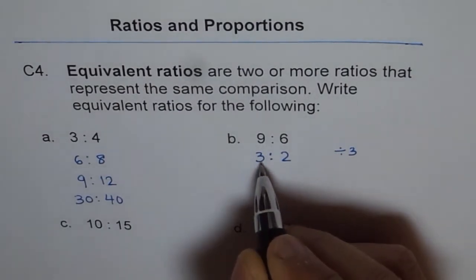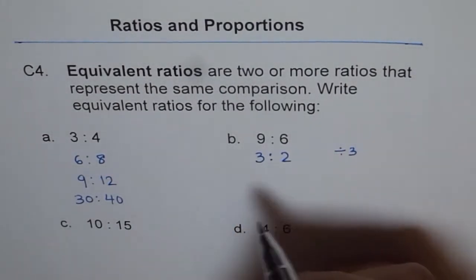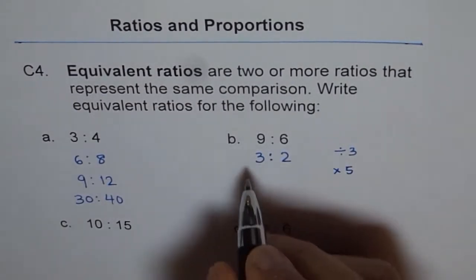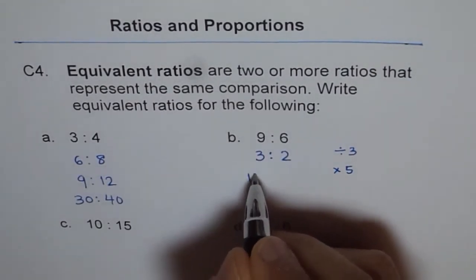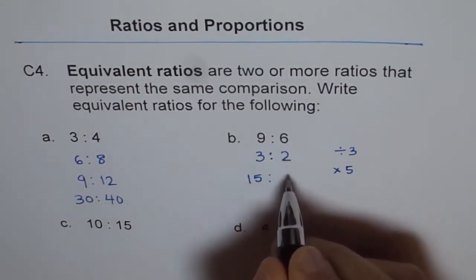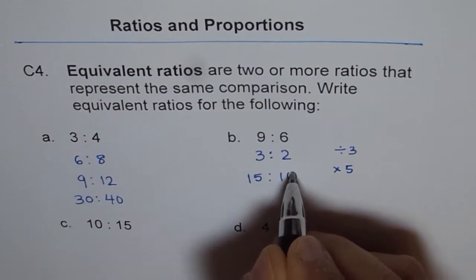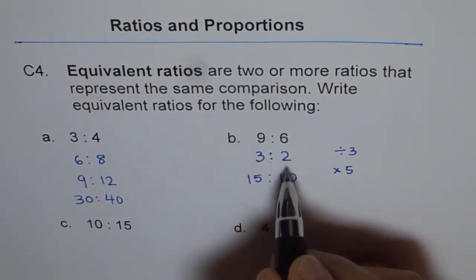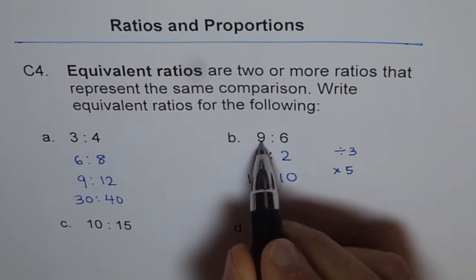You can multiply that equivalent ratio by some number and get more equivalent ratios. For example, now I can multiply this by 5. So what do I get? 5 times 3 is 15 and 5 times 2 is 10.